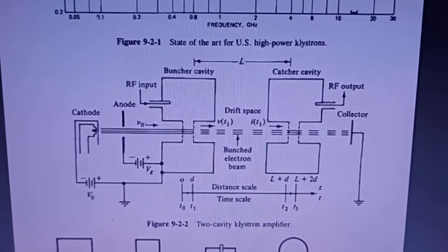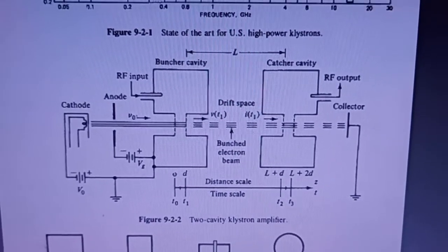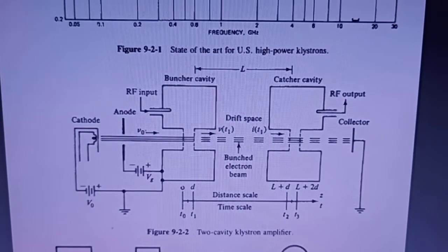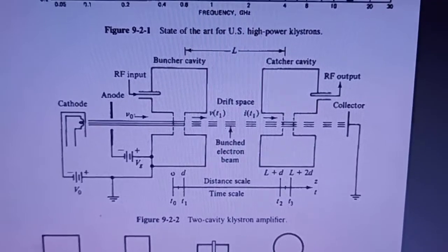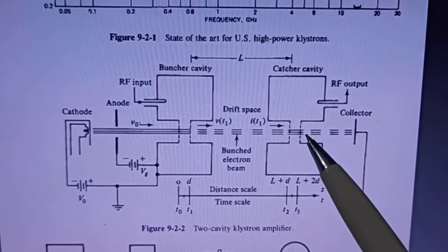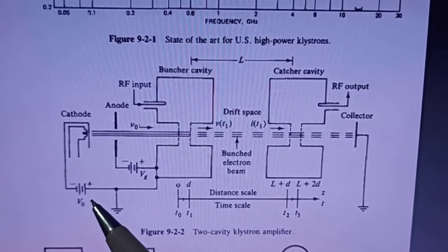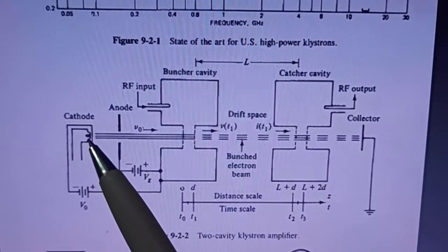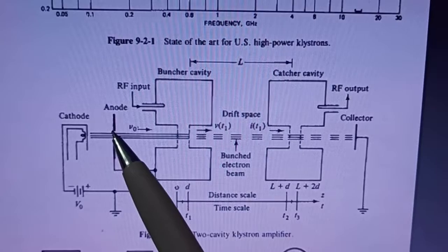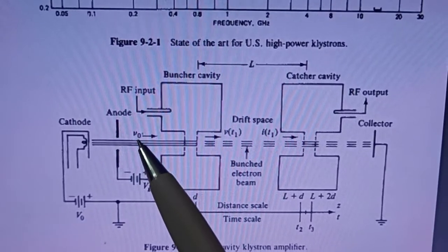Here we are seeing the two-cavity klystron amplifier diagram. This is the cathode and this is the anode and buncher cavity, catcher cavity. Electrons are released by heating the cathode with the power supply B0. These electrons travel towards the accelerating anodes, are converted into a beam, and they travel with a velocity v0.